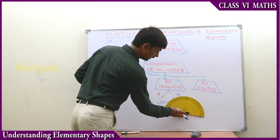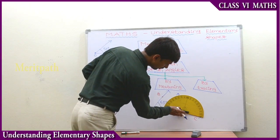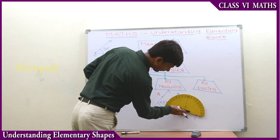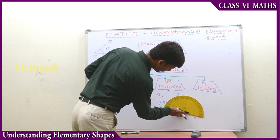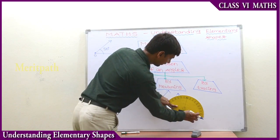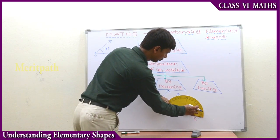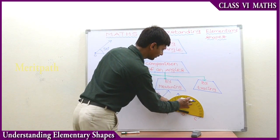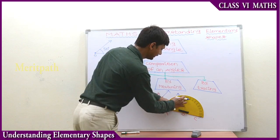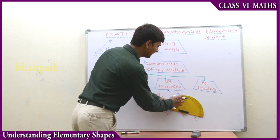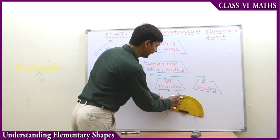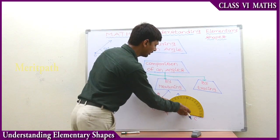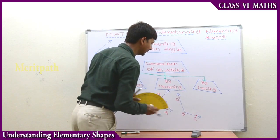Let us go to the next angle. We place the protractor here on this point. When we start from here: 0, 10, 20, 30, 40, 50, 60, 70, 80, 90, then 110, and 150. It is on 150 degrees.